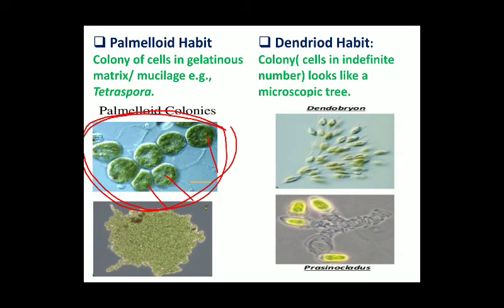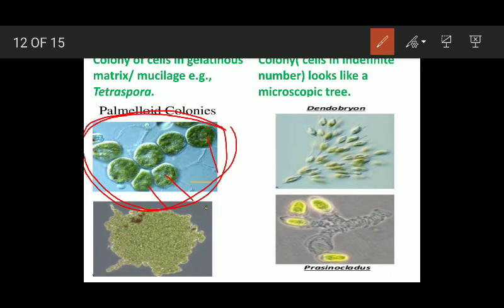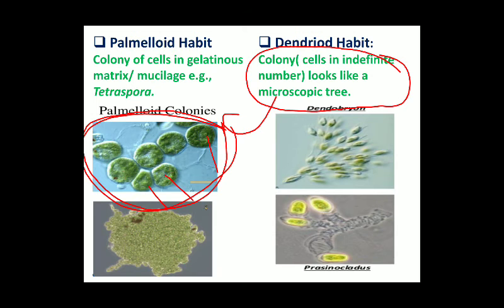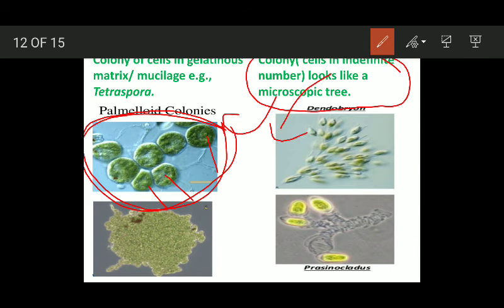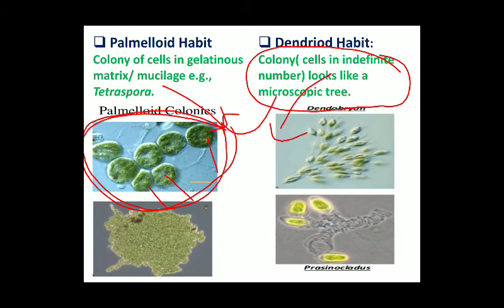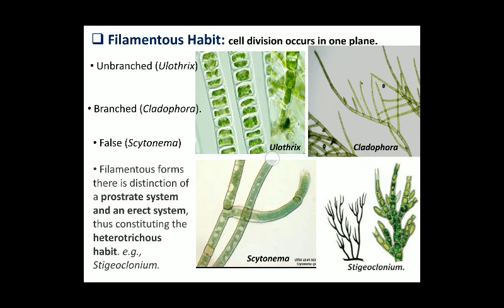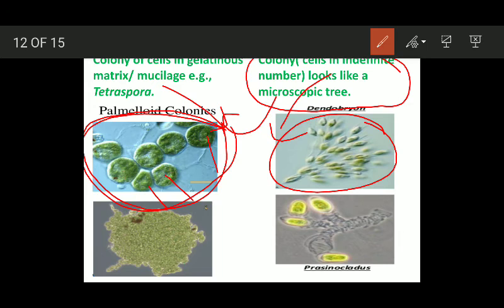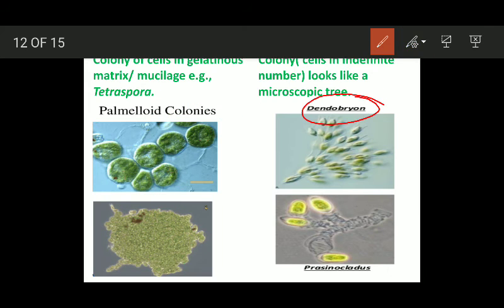Dendroid habit: in this type of colony the cells assume the shape of a microscopic tree. The colony looks like a microscopic tree. It is similar to palmelloid habit, but the only difference is the cells assume the shape of a small microscopic tree. Dendroid habit contains an indefinite number of cells, similar to palmelloid habit. The examples are Dendrobryon and Phaeodermatium.